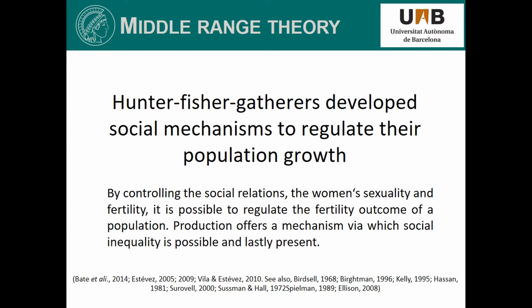The difference in productive activities according to sex makes it possible to relativize the value of the product obtained, and by extension, the value assigned to the person producing it. Production offers a mechanism by which social inequality is possible and lastly sustained. In other words, we may have here the long-term factor involved in the low demographic density and long-term demographic stability of the Pleistocene hunter-gatherers. And this would be my main research question: whether Pleistocene hunter-gatherers had social mechanisms or social norms which had an impact on demographic growth and, by extension, the emergence of social inequality.